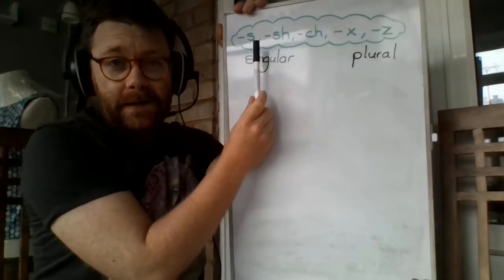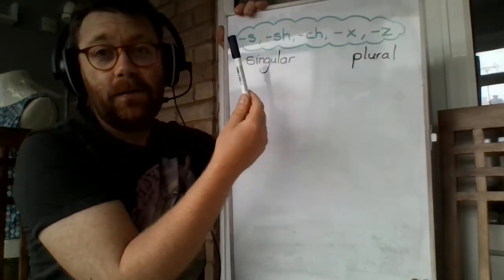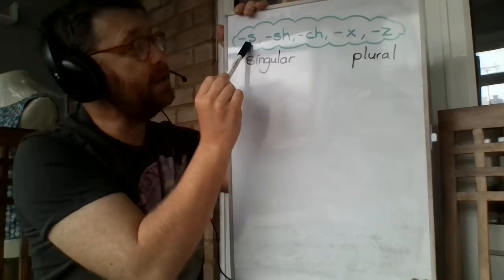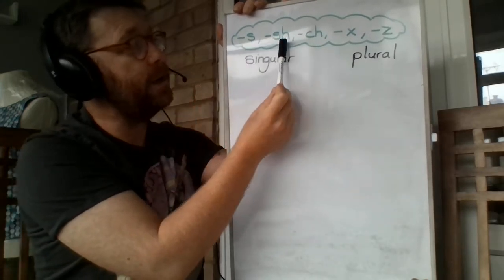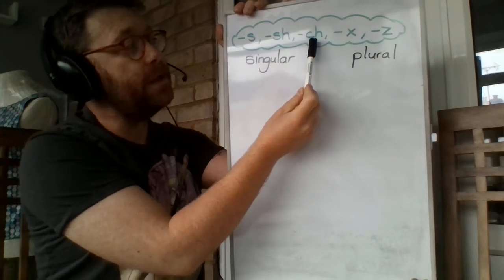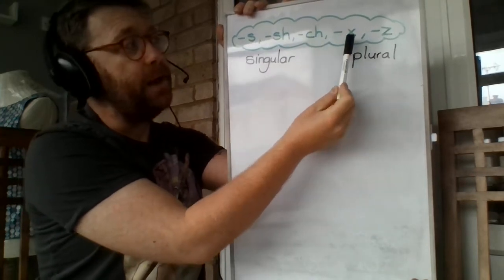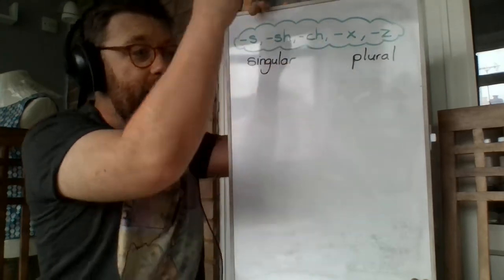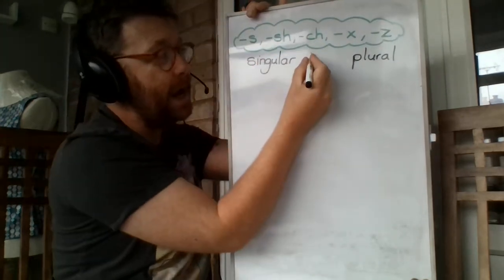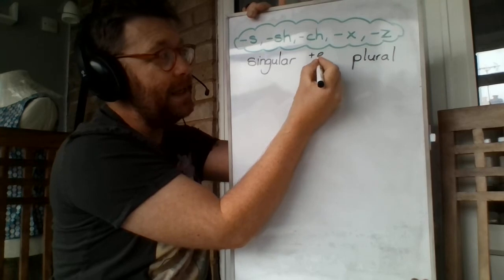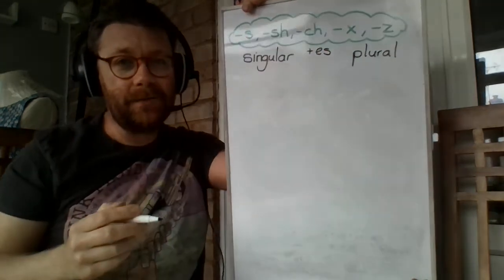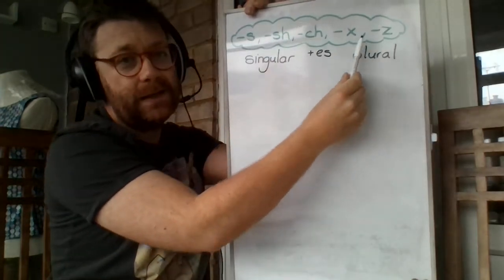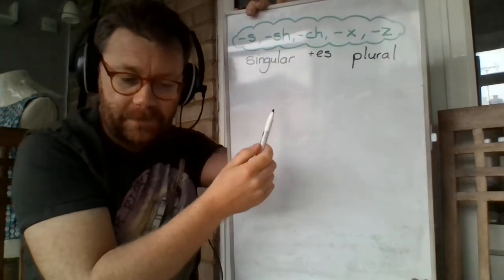At the top here inside my cloud, you can see I've got some word endings. So if a word ends with S, if a word ends with SH, if a word ends with CH, if a word ends with X or if a word ends with Z, then you have to add ES. So this time we're going to be adding ES because the words are going to end with these up here. Let's do a couple of examples.